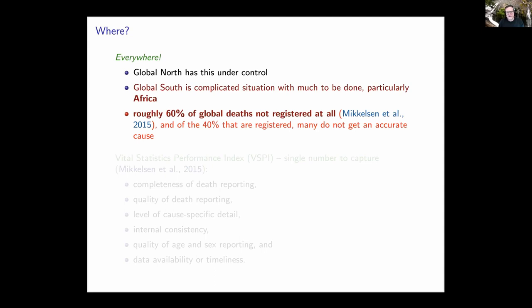Of the roughly 40% that are registered, many do not get an accurate cause. So as a global reality, the majority of deaths that happen on this planet do not get registered in any sense, and likewise don't get included in the kind of data collection, processing, and study that we do as academics. We do all kinds of things to get around this fact, but this fact underlies the actual situation.